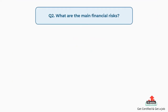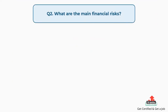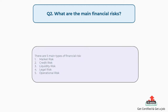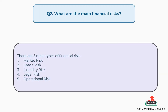Question number two: what are the main financial risks? There are five main types of financial risk. First, market risk. Second, credit risk. Third, liquidity risk. Fourth, legal risk. Fifth, operational risk.